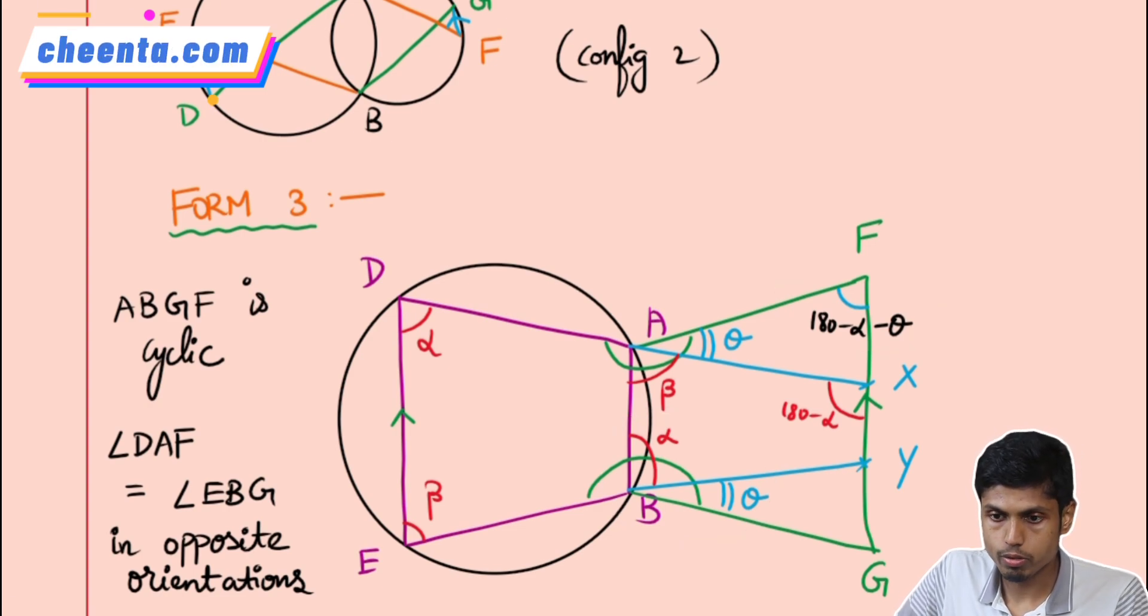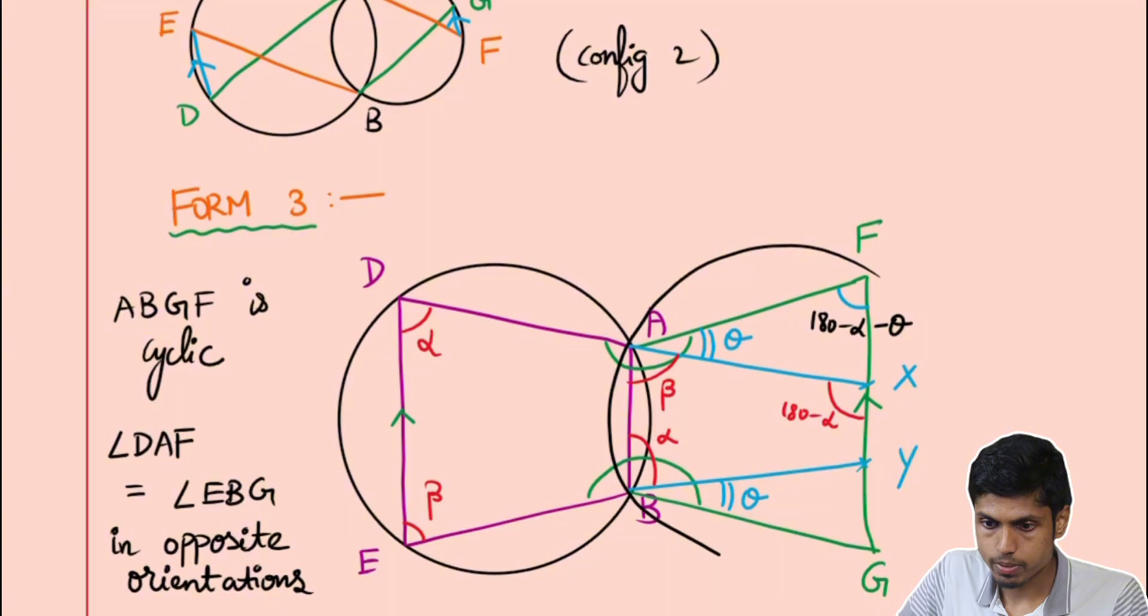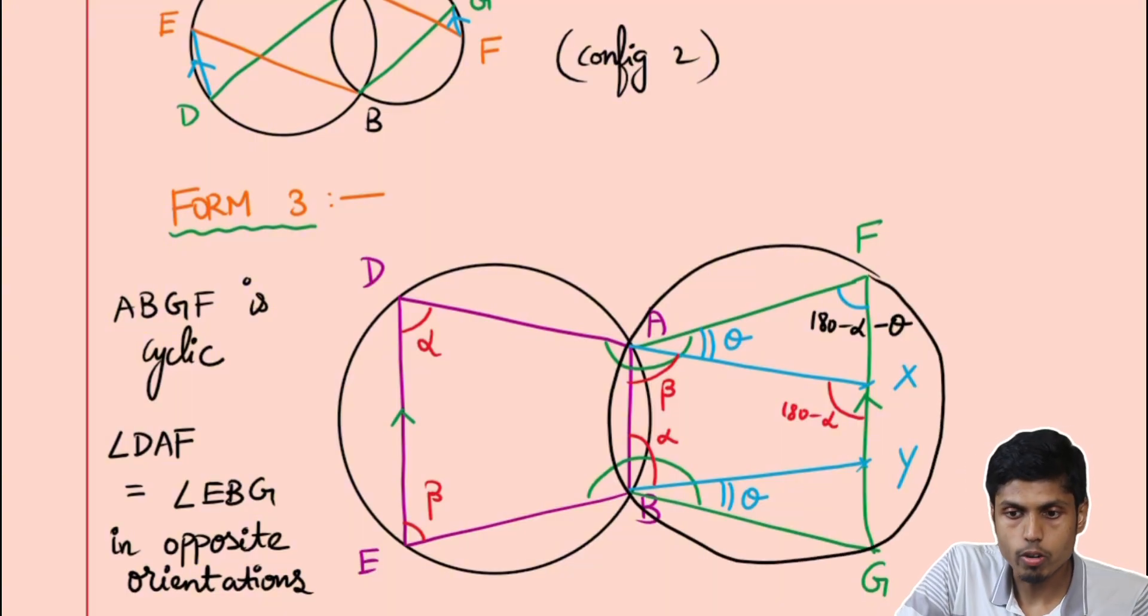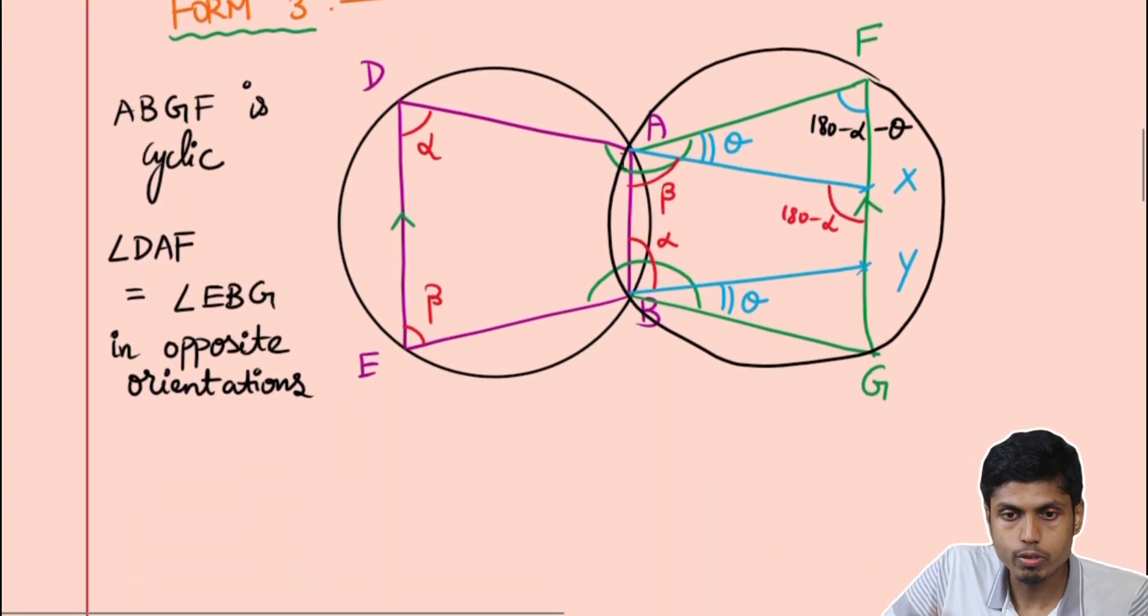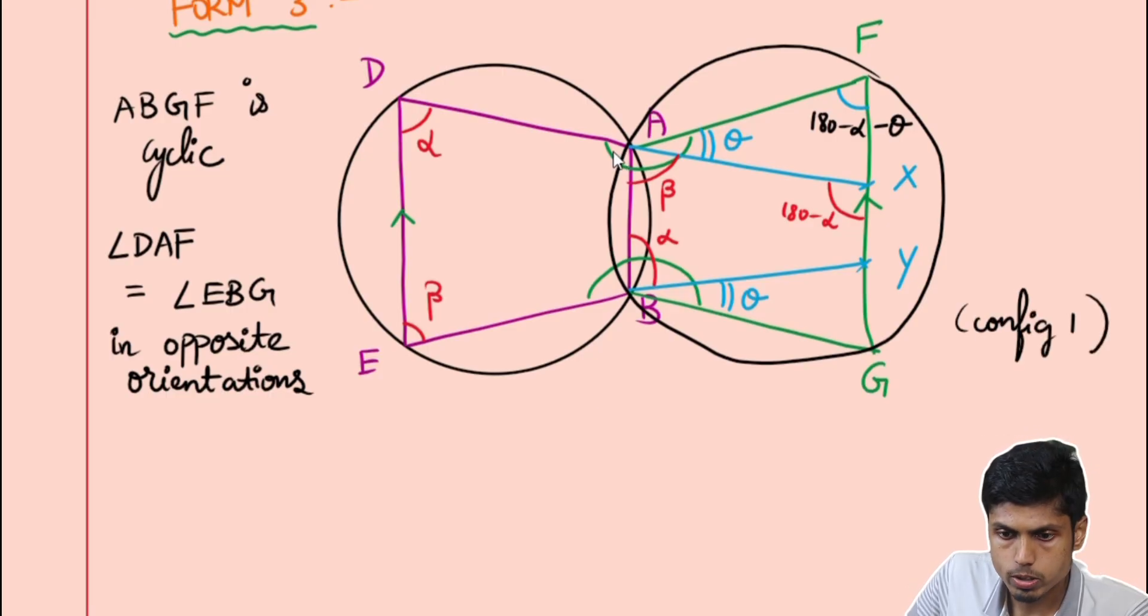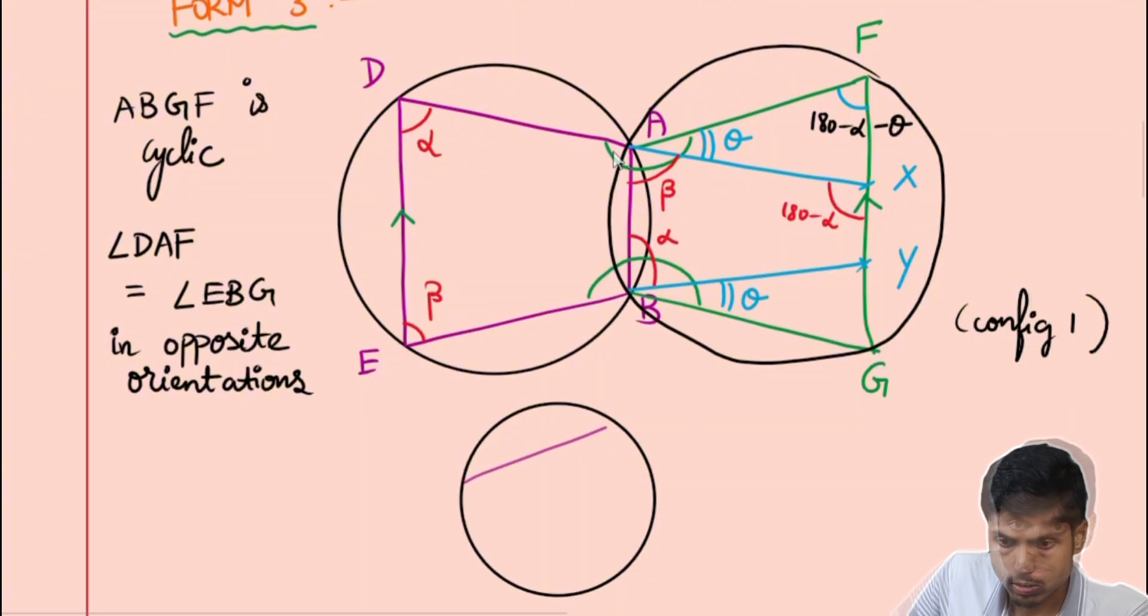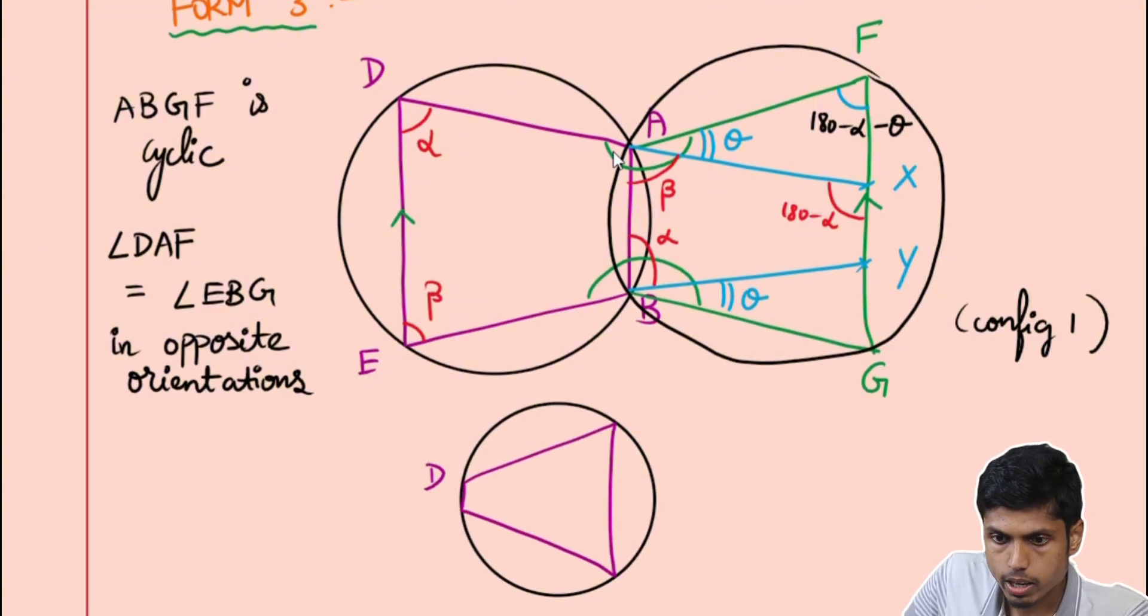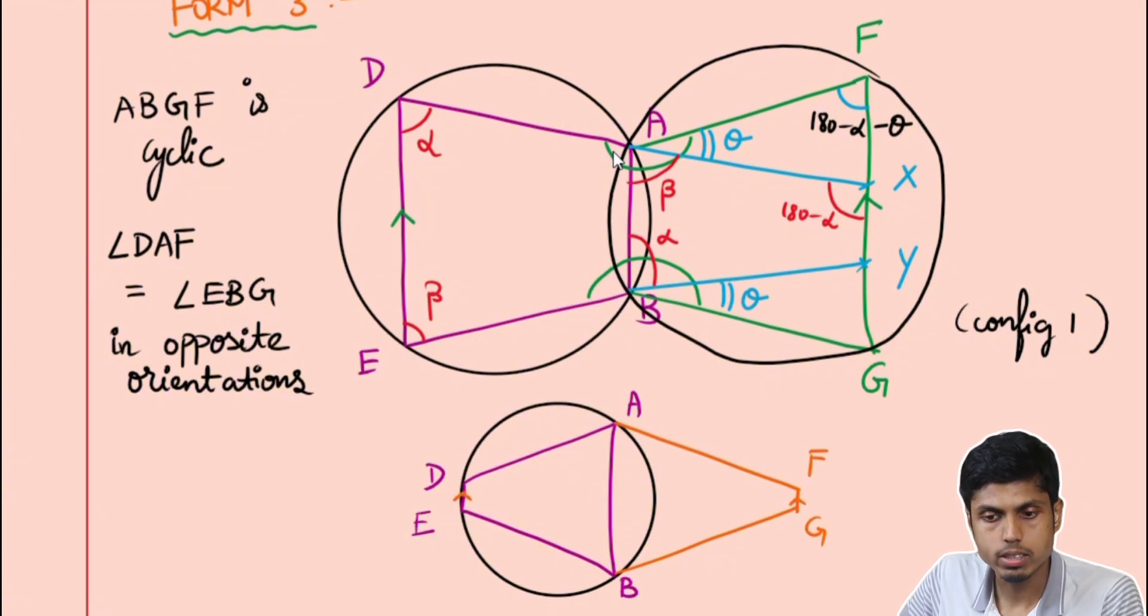This completes the proof that FABG is cyclic. So the configuration possible for form 3 is not only this. You could also have D, A, B and E, and then you make equal angles and form F and G such that DE and FG are parallel. Even in this case, you should be able to identify that ABGF is a cyclic quadrilateral.